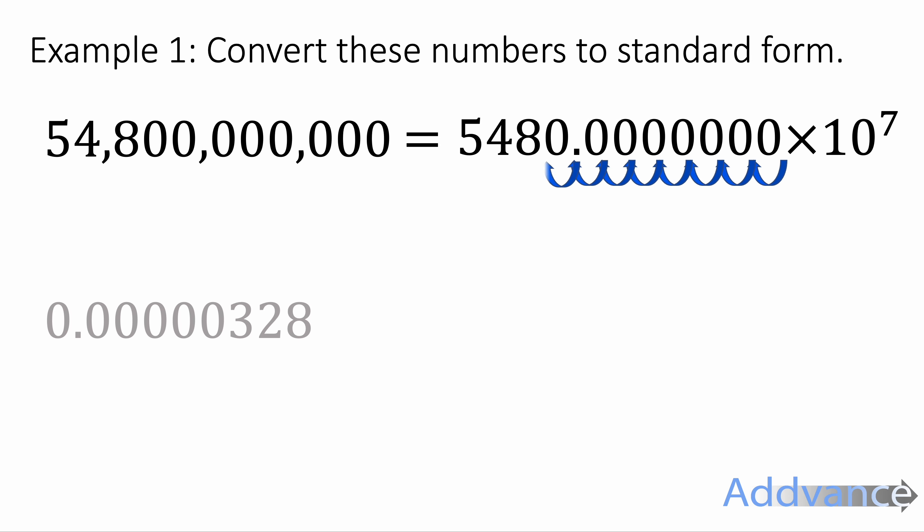Example 1: we're going to convert these numbers into standard form. So 54,800,000,000. I'm going to move a decimal until we get a number between 1 and 10. I've moved the decimal 5, 6, 7, 8, 9, and 10 places. So I recommend you actually drawing out those curly arrows to show how far you've moved a decimal. We are moving it from where the decimal was in the original number after the last 0 until we get a decimal between 1 and 10 over there. And we get 5.48 times 10 to the power of 10 because we've moved the decimal 10 places.